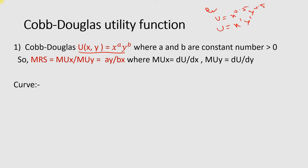To find the Cobb-Douglas utility function's marginal rate of substitution, we use the formula where we differentiate the utility function with respect to x to find the marginal utility of x, and differentiate the utility function with respect to y to find the marginal utility of y. If you differentiate with respect to x you will get this, and if you differentiate with respect to y you will get this.